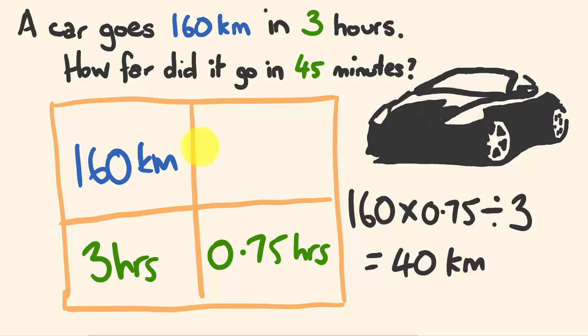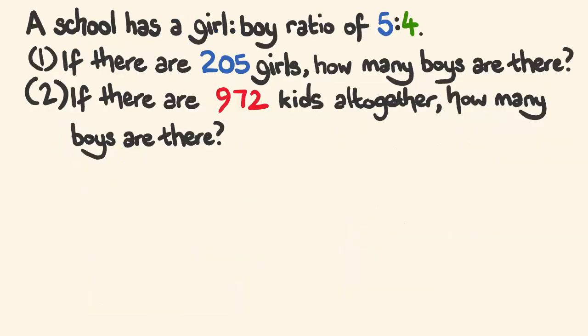Pretty cool, right? So in here, 40 kilometers. Alright, okay, let's have a look at this next one. Okay, for the last question. The school has a girl-boy ratio of 5 to 4. That is to say, for every 5 girls, there's 4 boys. So first off, if there's 205 girls at this school, how many boys are there? And the second question we're going to have a look at, if there's 972 kids all together, how many boys are there?